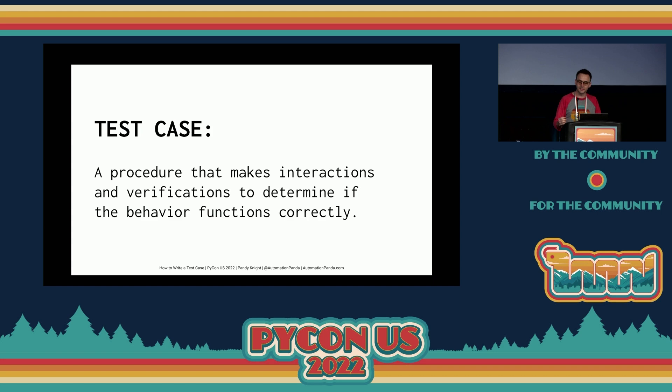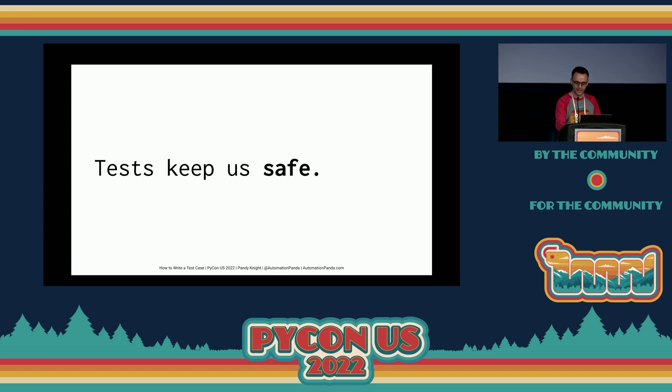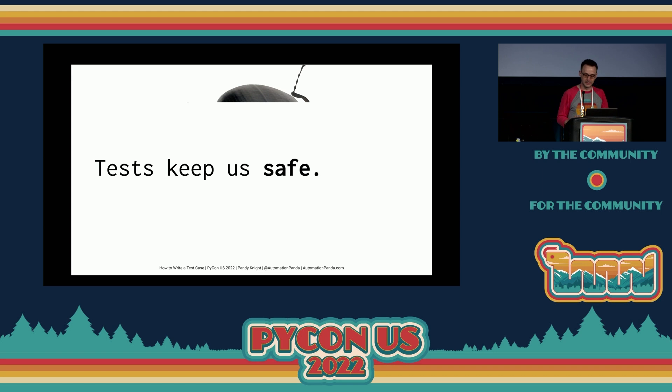A test case is a procedure for making those interactions and verifications. There are several kinds of tests, like unit tests, integration tests, or end-to-end tests. But all functional tests do the same basic thing — they try something and report pass or fail. That's how testing keeps us safe. Testing provides an empirical feedback loop for development. With tests, we know when things break. Without tests, coding can be dangerous.